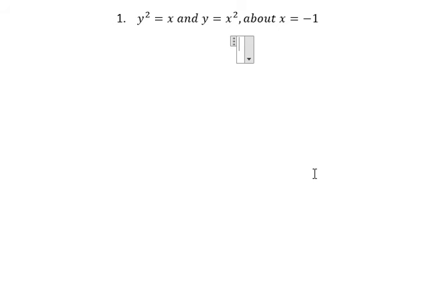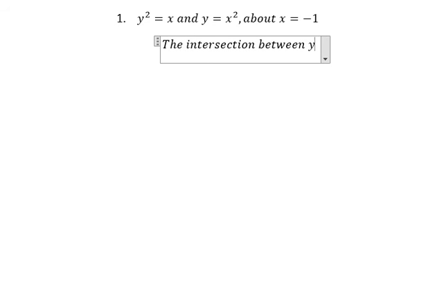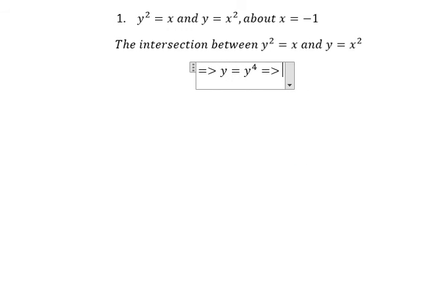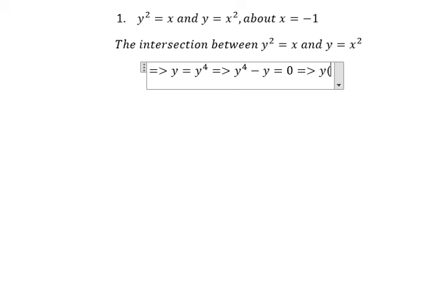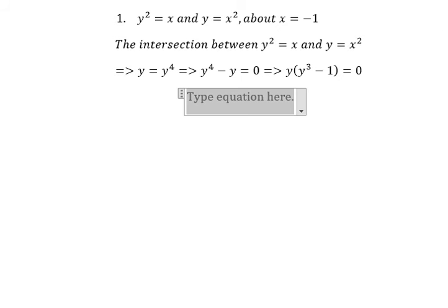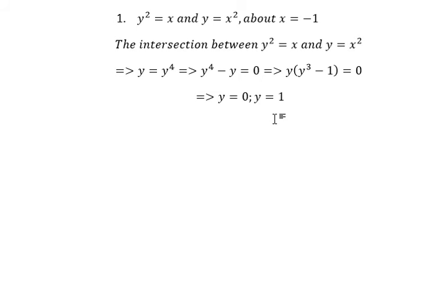I will show the technique to answer the question. We need to find the intersection between y squared equal to x and y equal to x to the power of 2. So we have x equal to y to the power of 2, and substituting gives y equal to y to the power of 4. So we get y to the power of 4 minus y equal to zero. We do factorization and get y equals 0 and y equals 1.